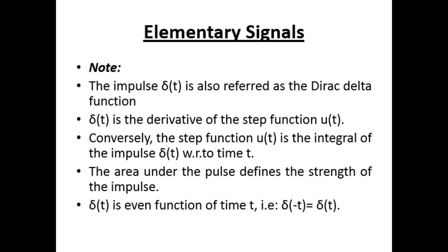One note: the impulse δ(t) is also known as the Dirac delta function. δ(t) is the derivative of the step function u(t), or equivalently, the step function u(t) is the integral of the impulse δ(t) with respect to t. The area under the pulse defines the strength of the impulse. δ(t) is an even function, that is, δ(−t) = δ(t).